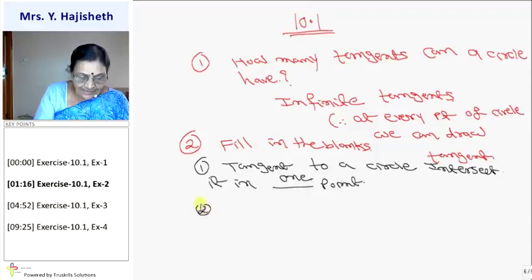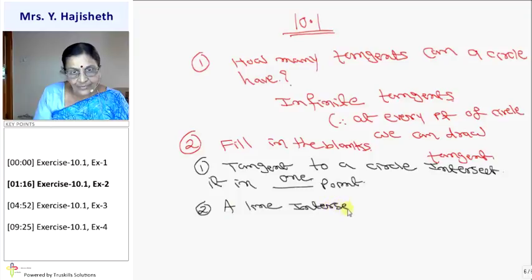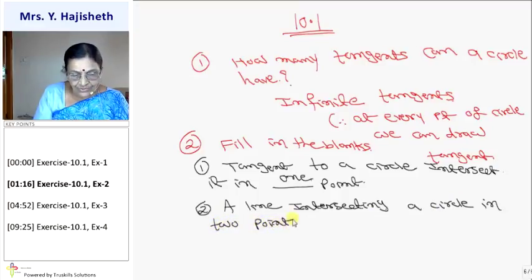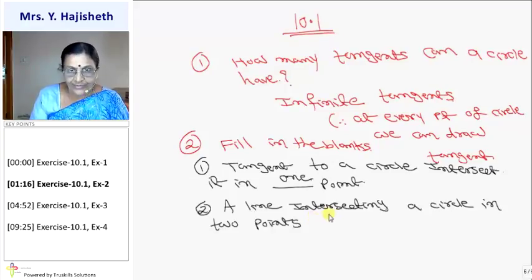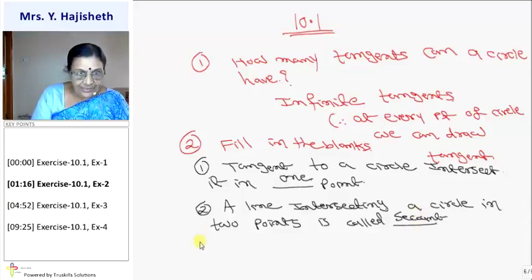The second fill in the blank is: a line intersecting a circle in two points is called dash. You must understand the definition — you must know the meaning of everything. Here the definition is given and only one term is missing. A line intersecting a circle in two points is called a secant. S-E-C-A-N-T.